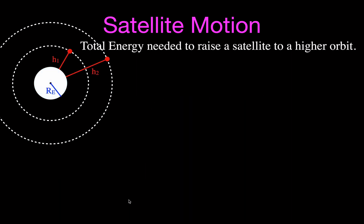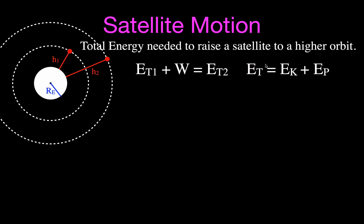Now we're going to derive the equation for the total energy needed to raise the satellite to a higher orbit. This is also the equation we can use to find the amount of work — the work we need to do to raise the satellite to a higher orbit. We start with the equation: total energy at the lower orbit plus any work done on the satellite equals the total energy at the higher orbit. The total energy is equal to kinetic energy plus potential energy: E = (1/2)mv² − GMm/r.